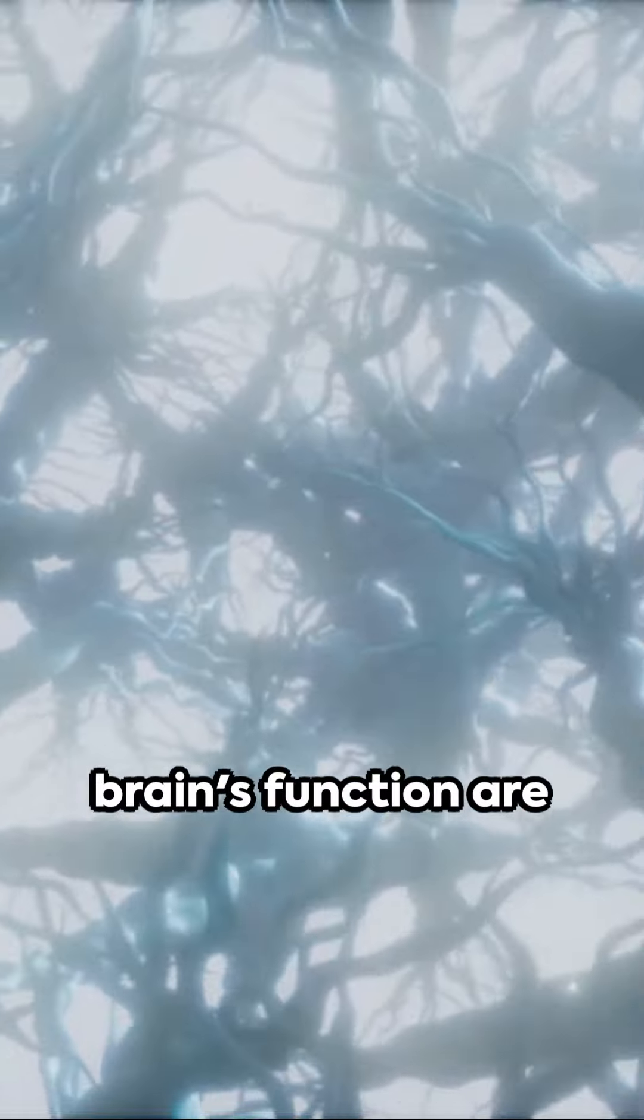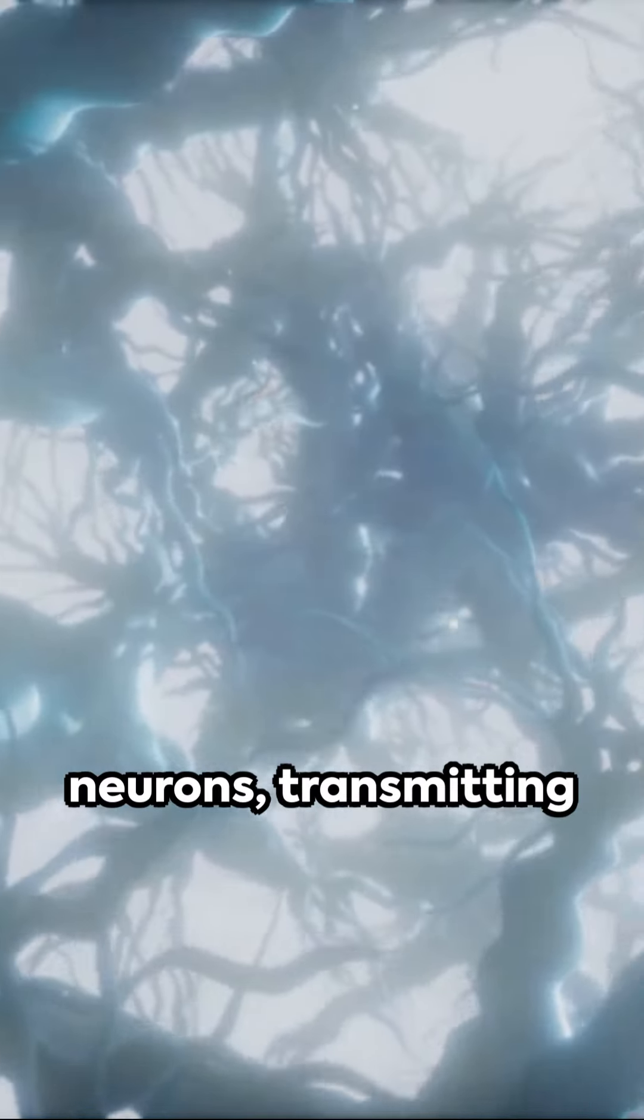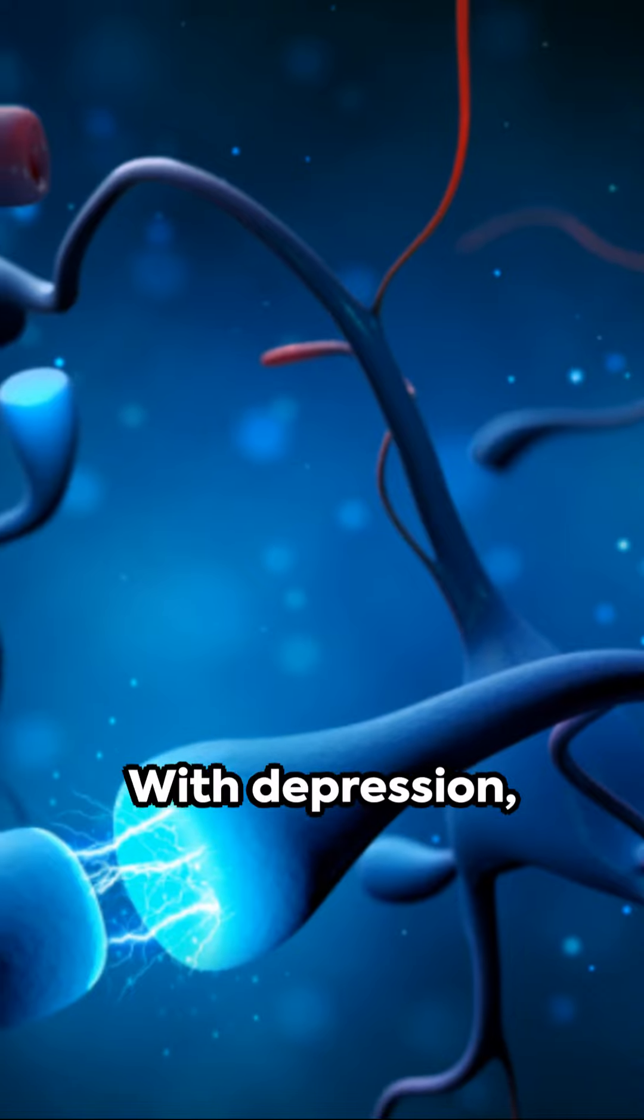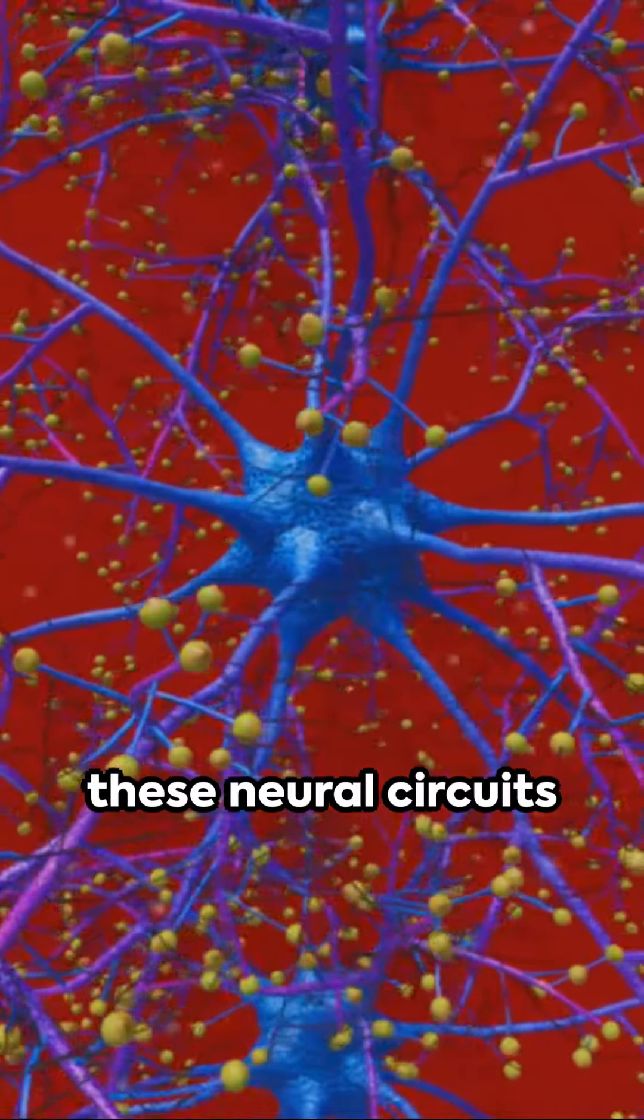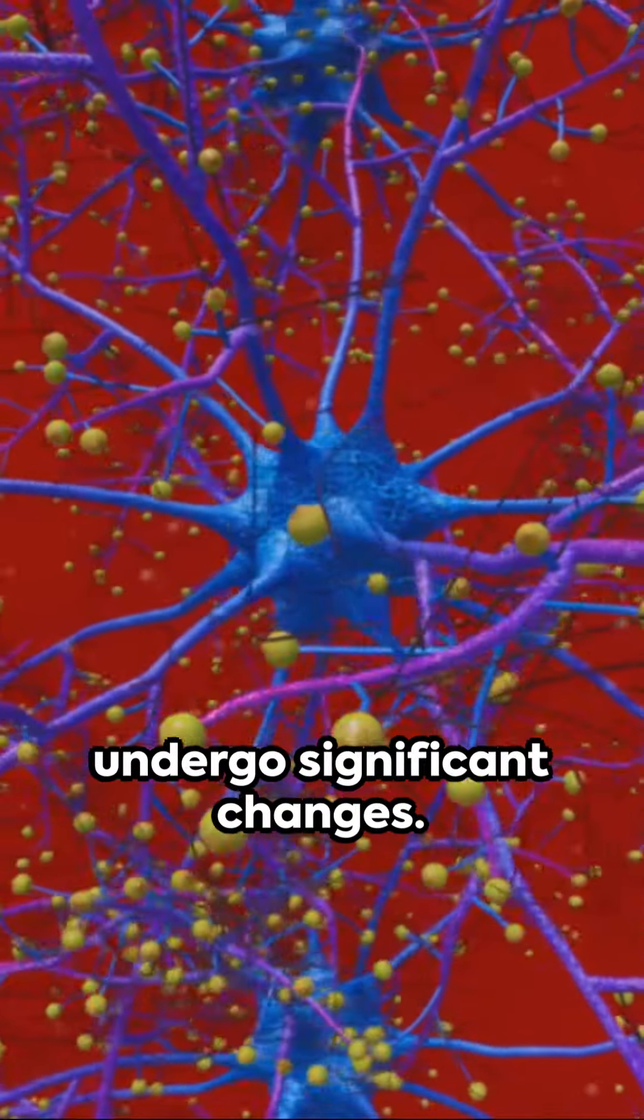At the heart of our brain's function are neurons, transmitting messages through electrical signals. With depression, these neural circuits undergo significant changes.